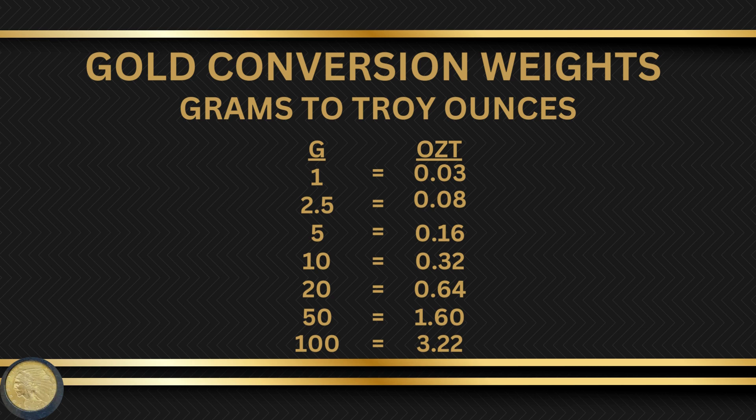If you were at the LCS or you're online and they were using grams and you're used to using troy ounces, this is how you'd figure out the conversion so it's easier to determine pricing. If they had it in one gram, that would equal 0.03 of a troy ounce. If they had it in 2.5 grams, that would equal 0.08 of a troy ounce. Five grams equals 0.16 troy ounces.